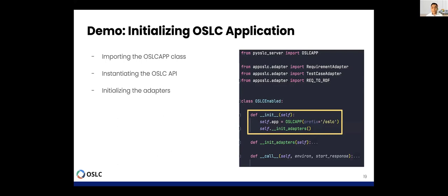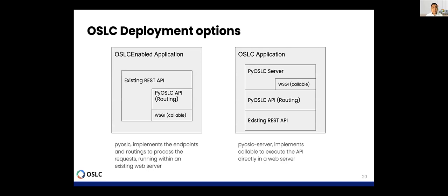Most REST APIs use JSON and XML and implement all the resource methods to interact with the data source. OSLC API, on the other hand, has the capability to expose information using RDF and the linked data model for interaction with other applications. Using these two elements — the REST API on one side and the OSLC API on the other — we could create what we call an OSLC-enabled application. This OSLC-enabled application will have both the REST API endpoints and the PyOSLC or OSLC specification endpoints to access information. Here is an example: we have the existing REST API, import from PyOS server the OSLC application, instantiate it, and then initialize the adapters. We could then access both the REST endpoints and the OSLC endpoints.